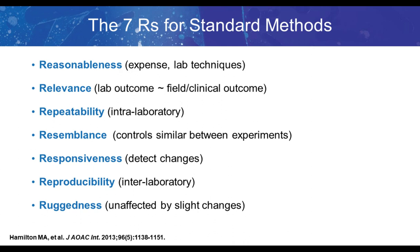Then there's responsiveness of the model — the ability to detect changes or differences. For example, if we had a low, medium, and high efficacy treatment, the model should be able to detect the differences between those. Reproducibility is whether another lab can perform the same method and get similar results. Ruggedness is whether the model is affected by slight changes to the protocol — for example, do you get the same results at pH 6.5 as at pH 7.5?